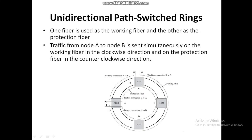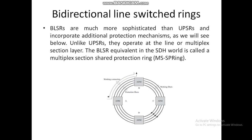In the case of unidirectional path-switched ring, one is the working path and another is the protection fiber. Data normally travels on the working path, but in case of any failure, it switches to the protection fiber. The working connection operates in the clockwise direction and the protection fiber in the anticlockwise direction. In the case of bidirectional line-switched ring, data transmits in both directions — A to B clockwise, and B to A counterclockwise.